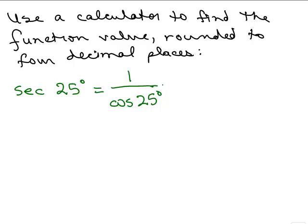Okay, so then we're going to put it all in the calculator. So go ahead and try that on your own calculator. Make sure it's in the degree mode and my calculator comes out when I round to four decimal places, 1.1034.